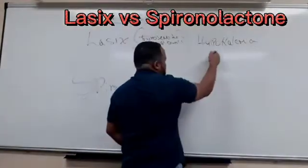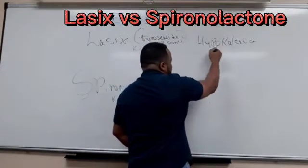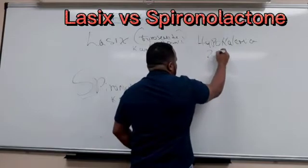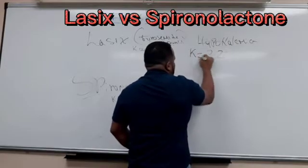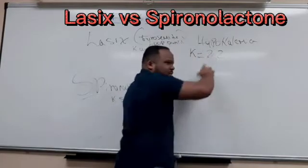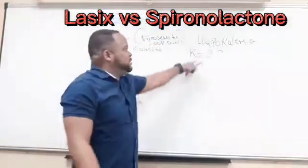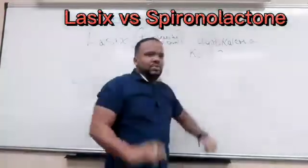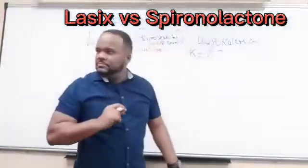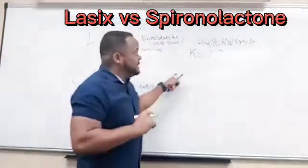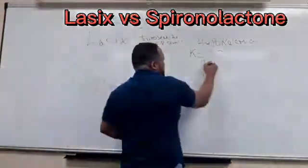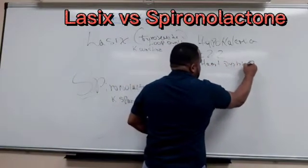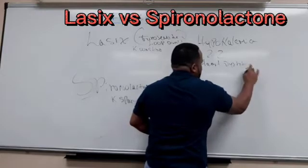So hypokalemia — you can assess that by the symptoms. Another way to say hypokalemia is a potassium level of 2.2, for example. That's too low. So we can say hypokalemia or potassium of 2.2 as an example. As a symptom: heart dysrhythmias.